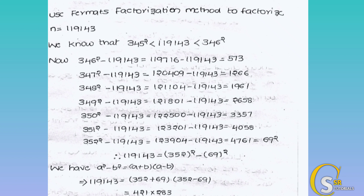First, we find the square root of n. The square root of 119143 is approximately 345.15. So 345 squared is less than 119143, which is less than 346 squared. Since 119143 lies between these, we start our iteration from 346.